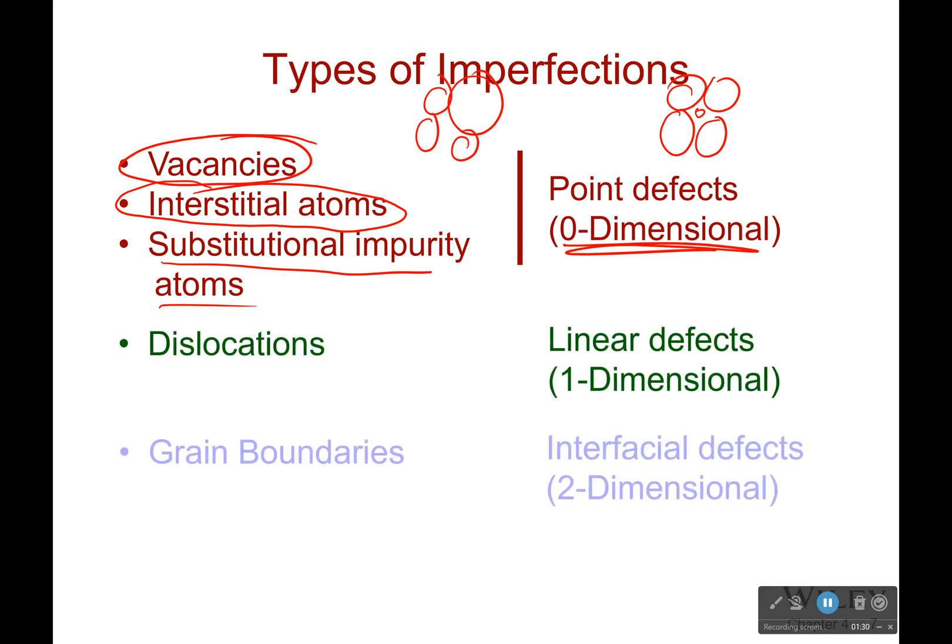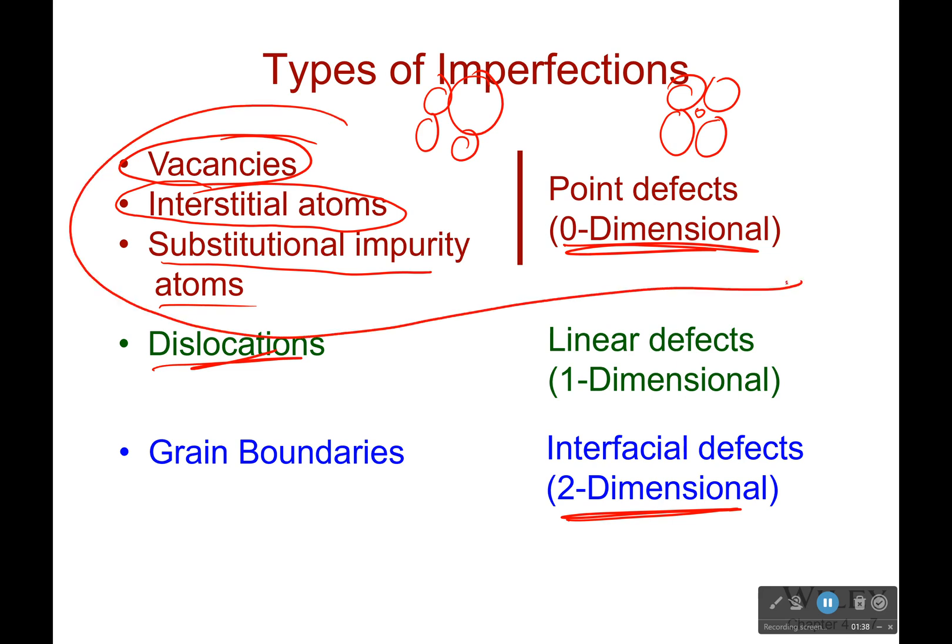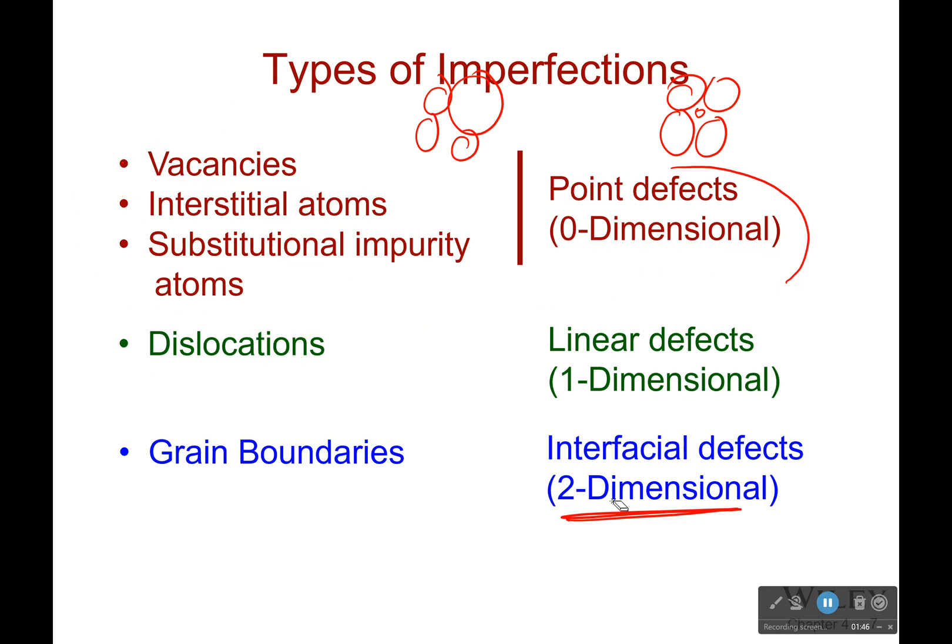I have dislocations, and finally grain boundaries, which are my two-dimensional defects. Dislocations we're going to get to later. We're going to focus on vacancies, interstitial atoms, and impurity atoms first. We're just going to go in this direction. So I'm not going to focus much on dislocations and grain boundaries right now.